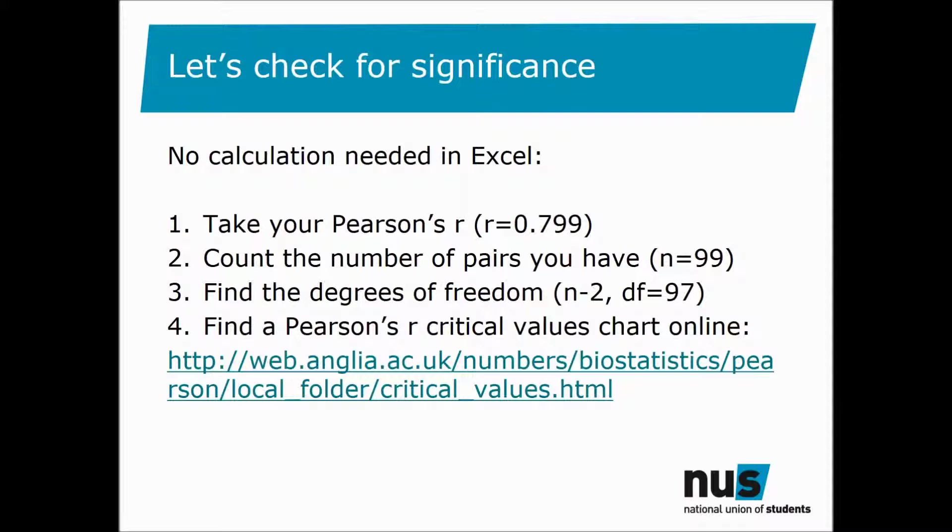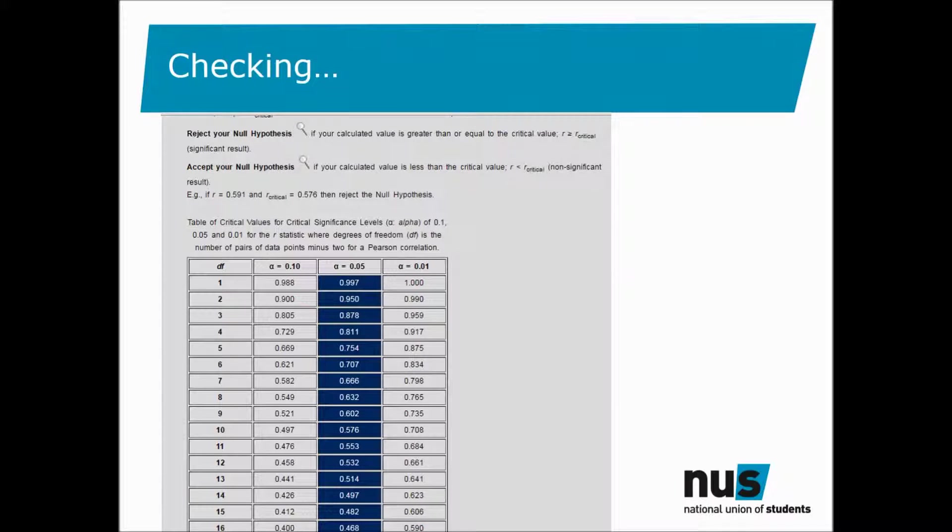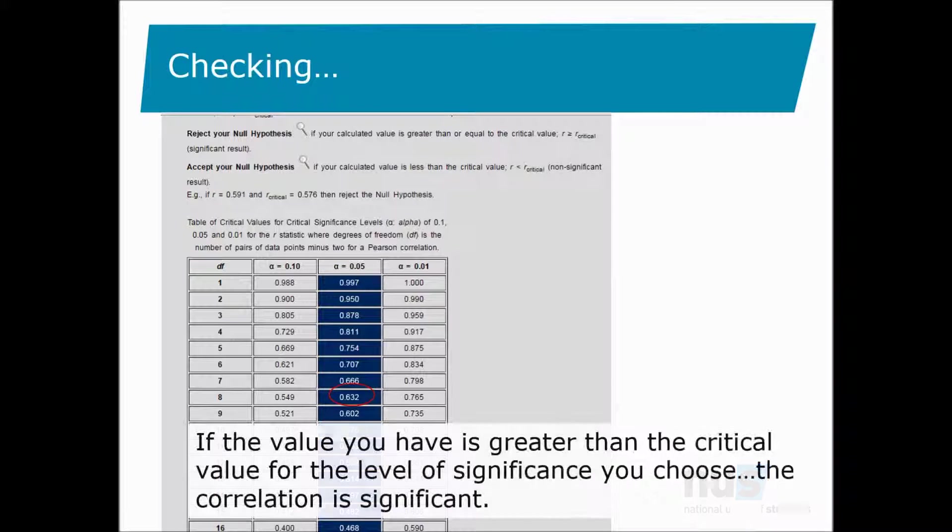Next find a critical values chart online. There's several available on Google or this link provides one from Anglia Ruskin University although it only goes up to 40 degrees of freedom. In your critical values table look up your degrees of freedom down the side. Then choose your significance level across the top. The highlighted column here is 0.05 which represents a level of significance of 95%. Look across from your degrees of freedom to find the critical value for your data. If the value you have for your Pearson's R is greater than the critical value at the level of significance you choose then the correlation is significant.